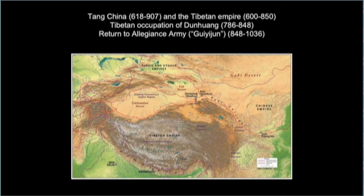Going back to the parallel circumstances of the Tang and Tibetan Empires — the Return to Allegiance Army period in the mid-9th century coincides with the fragmentation of the Tibetan Empire, precipitated by a series of succession crises. After that, overlapping directly with the Return to Allegiance Army, there was no central religious or political authority in Tibet until the second transmission of Buddhism to Tibet, beginning in the late 10th century. I hypothesize in my book that this independence from both the Tang Chinese court and Tibetan central authority very likely led to religious and artistic innovations during this period.